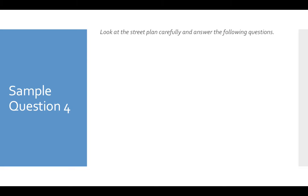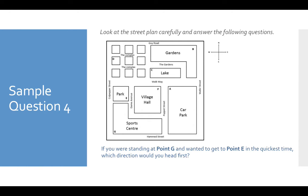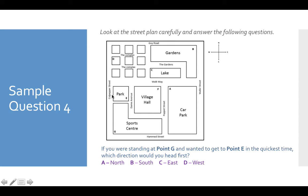Sample question four — here we have the same map again. If you were standing at point G, which is here, and wanted to get to point E in the quickest time, which direction would you head first? Obviously you can't go through the building because you're going to have to walk on the roads. So are you going to walk north, south, east or west? You're starting here and you want to go there. If you walk one way, you'd have to go up and around, which seems quite long-winded. But from here you could literally just go straight up, cut through there and you'd be there. So the first direction you would go is north — from G you would be heading upwards, which as the map shows is north.